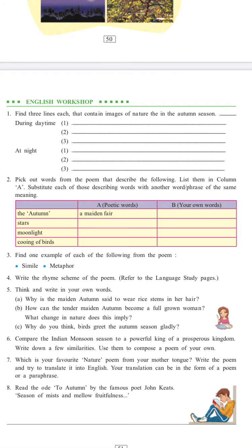The autumn, the stars, moonlight - moonlight means chandni ki roshni, cooing of birds means birds ka awaaz karna, pakshiyo ka awaaz karna.